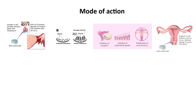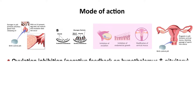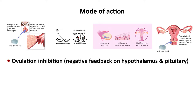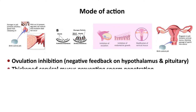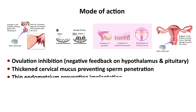Mechanisms of action of COCP include ovulation inhibition via negative feedback on the hypothalamus and pituitary, thickening of cervical mucus to prevent sperm penetration, thinning of the endometrium, and prevention of implantation.